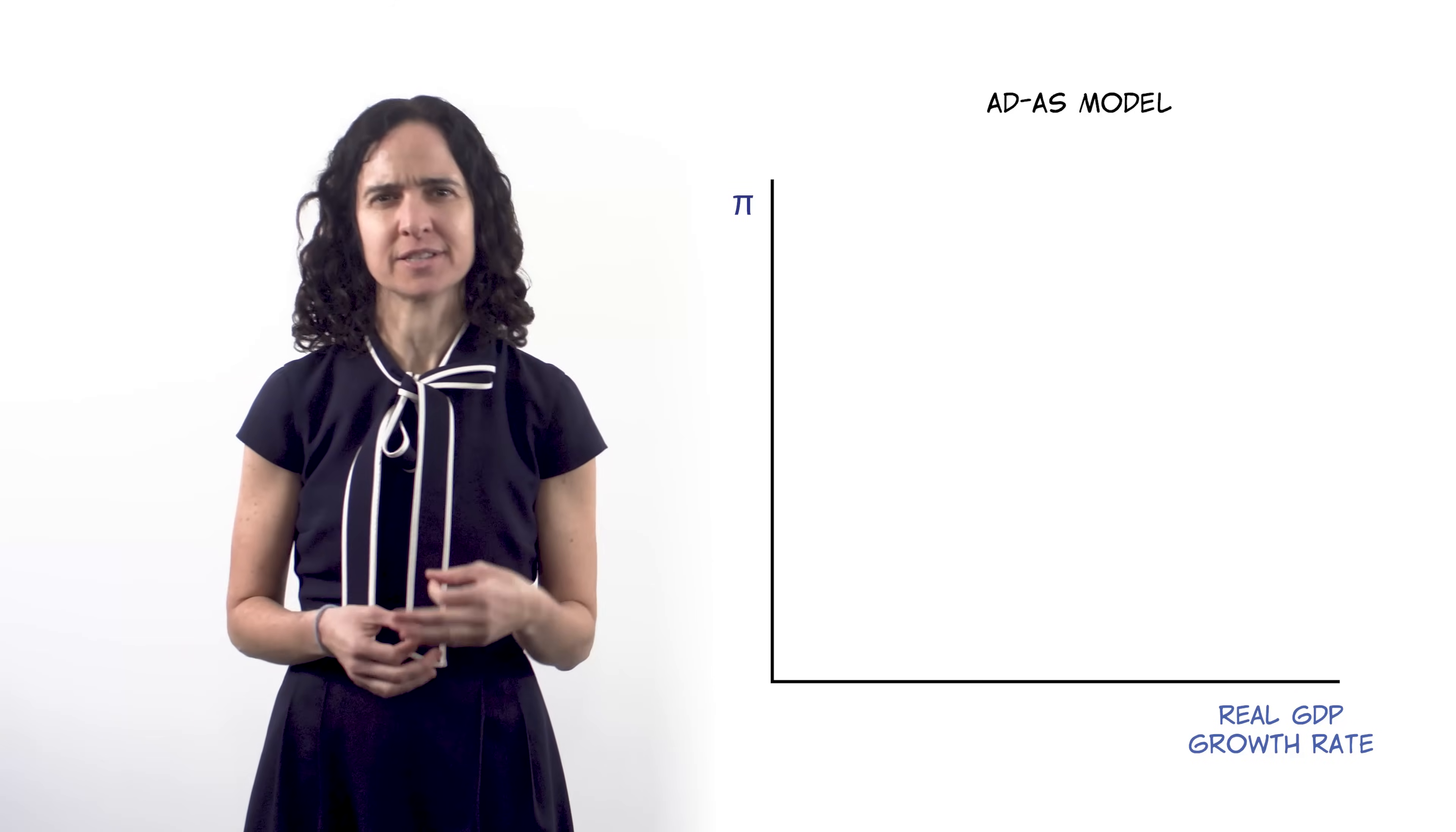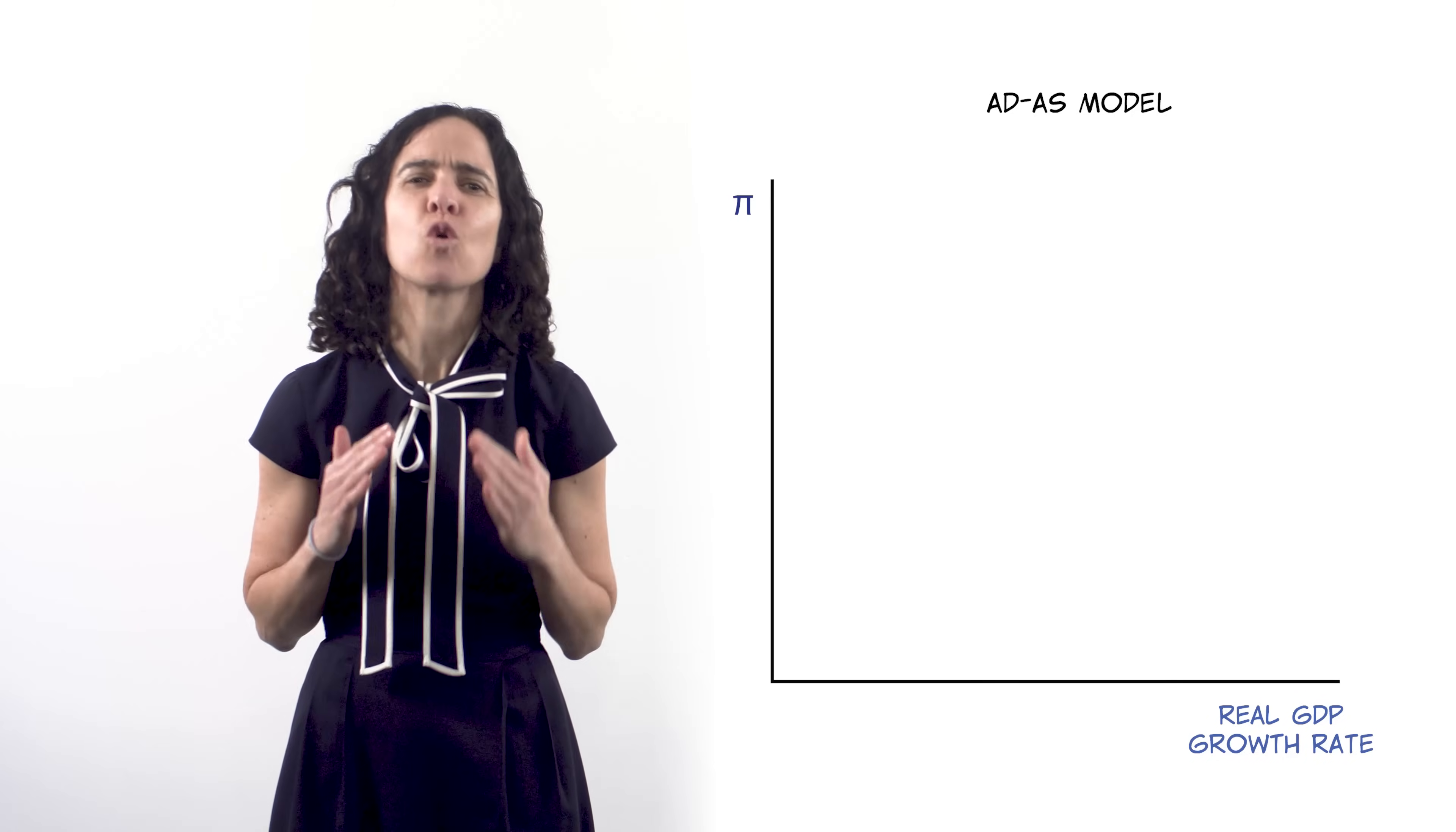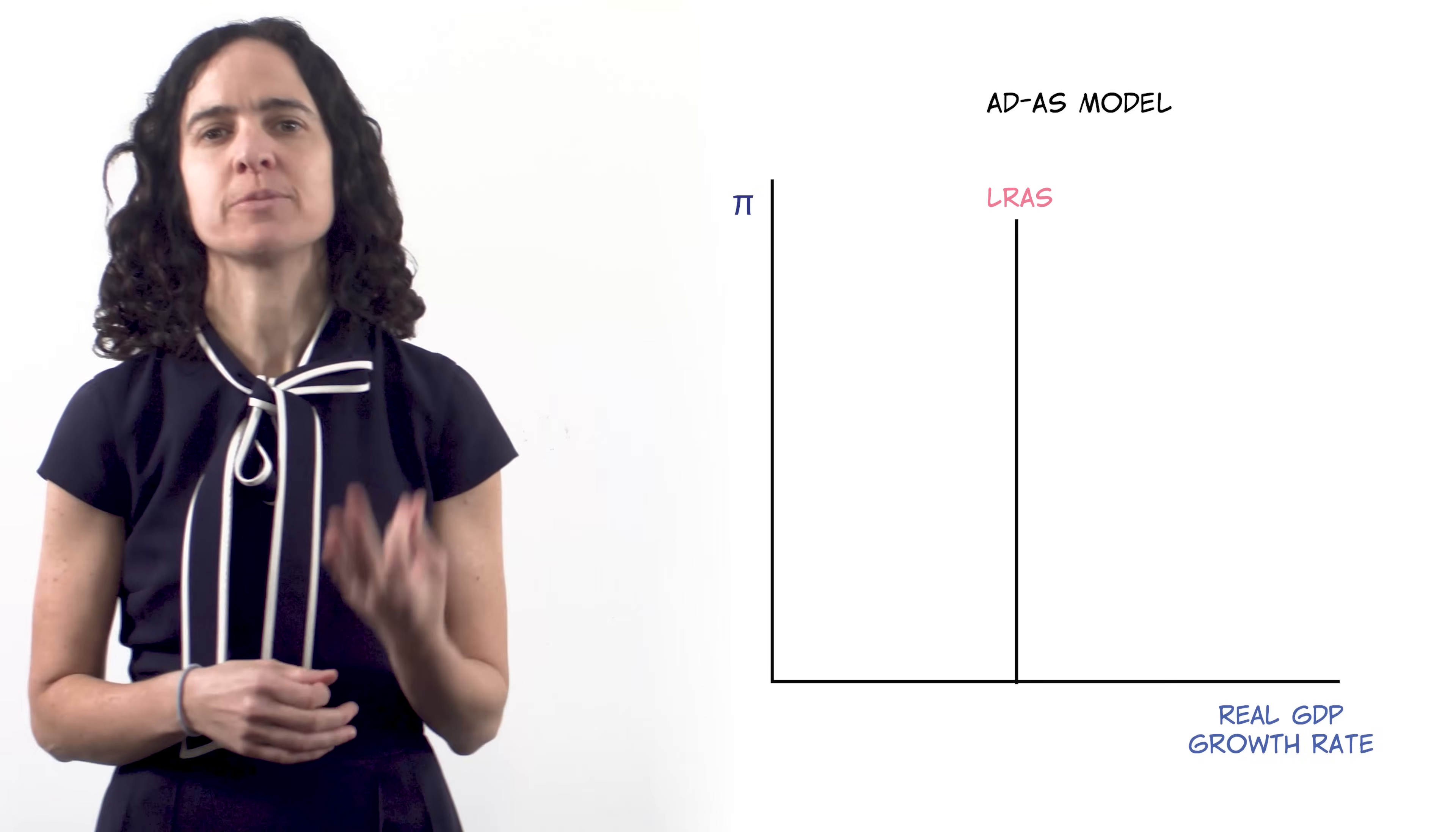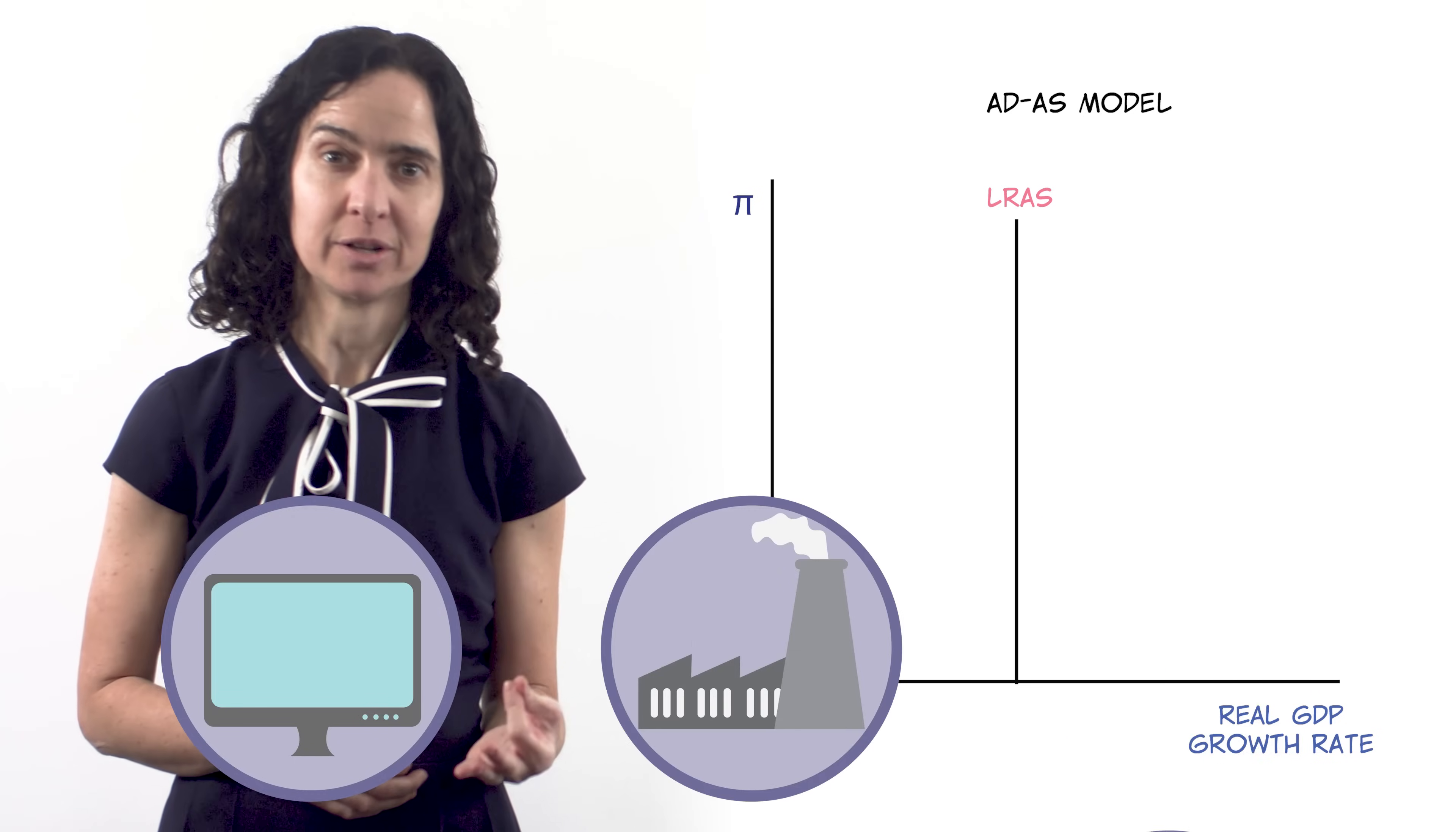But before we get into the causes of the booms and the busts of an economy, we have to know what the economy's normal GDP growth rate is. That's the long-run aggregate supply curve. It's the vertical line because an economy's long-run growth rate shouldn't depend on inflation. Instead it should depend on the fundamental factors of production: technology, capital, and labor.